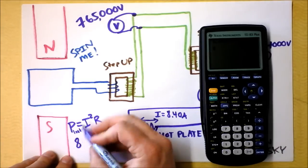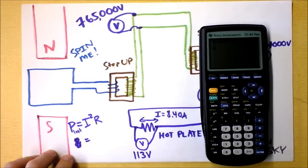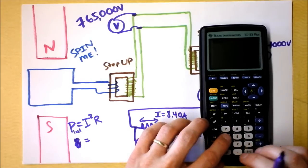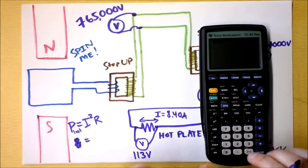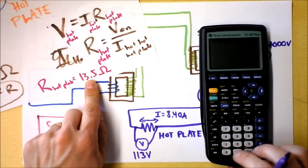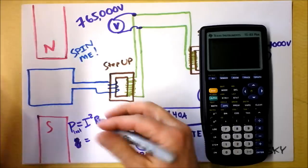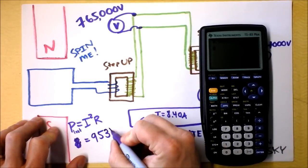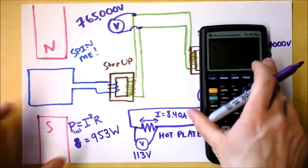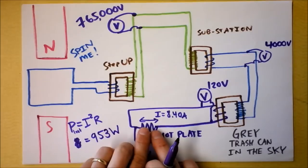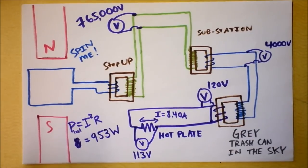Do you want to figure out the power of that hot plate? Let's go ahead and do it. If I'm trying to find this power lost, it's going to be the current, which is 8.4 amps, and I square that sucker, and then I multiply it by the resistance. We had calculated that the resistance of the hot plate was 13.5 ohms. So I find a power of 953 watts.